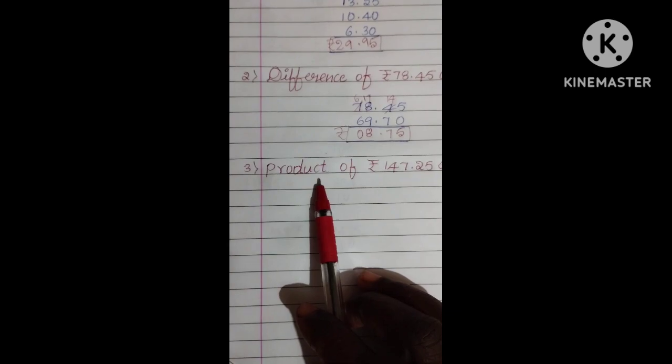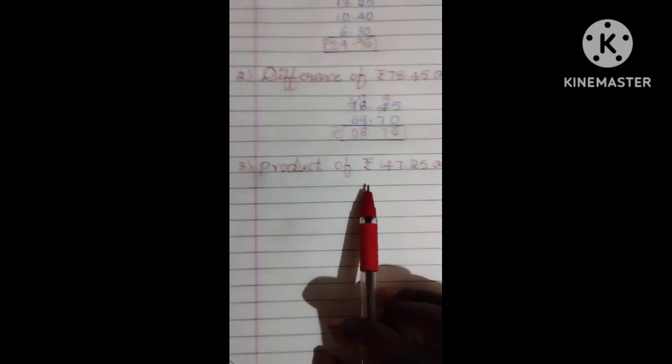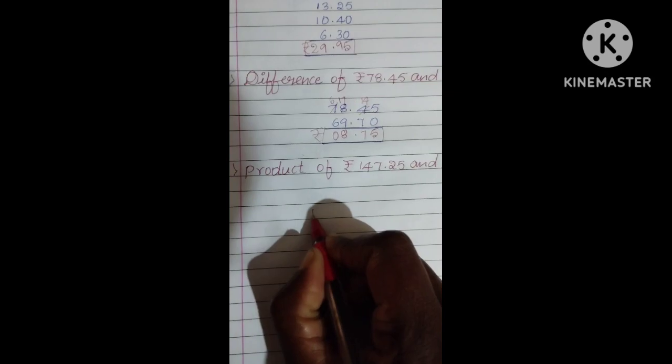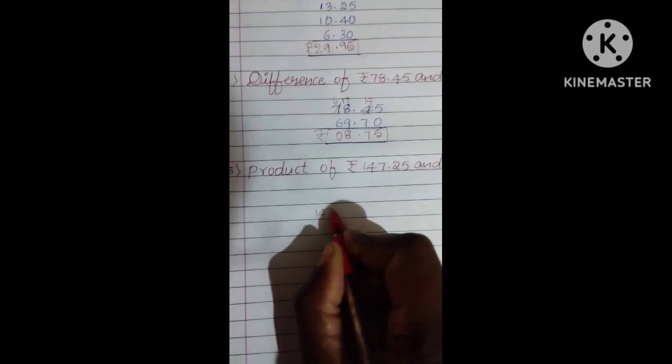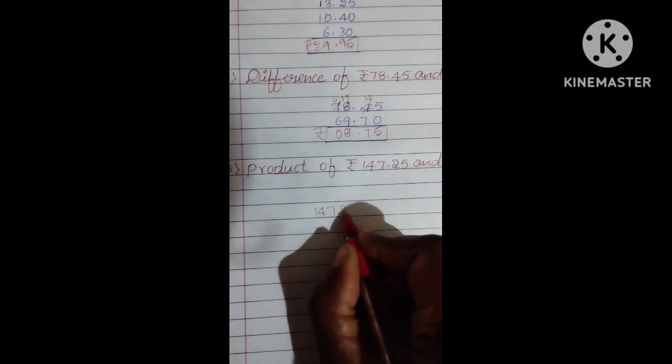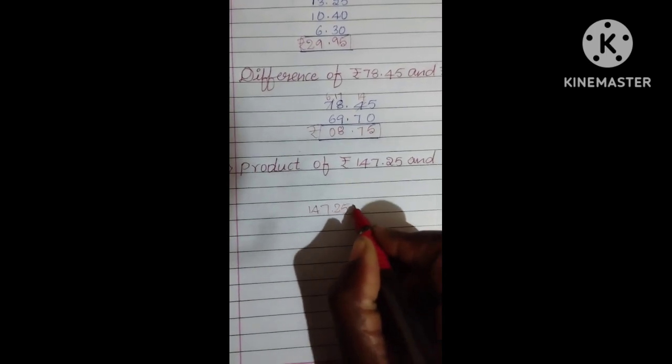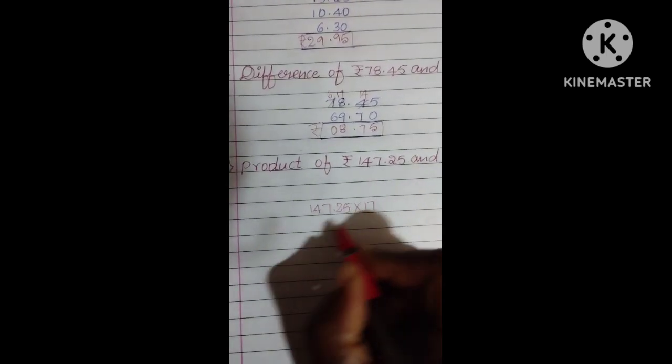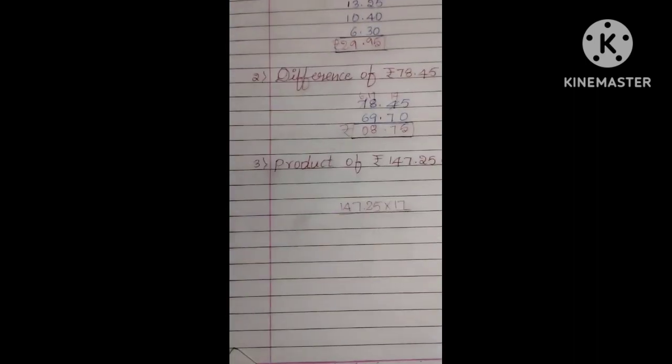Product means you want to do the multiplication here. See here, you can write now 147.25 into 17. See, do the multiplication.